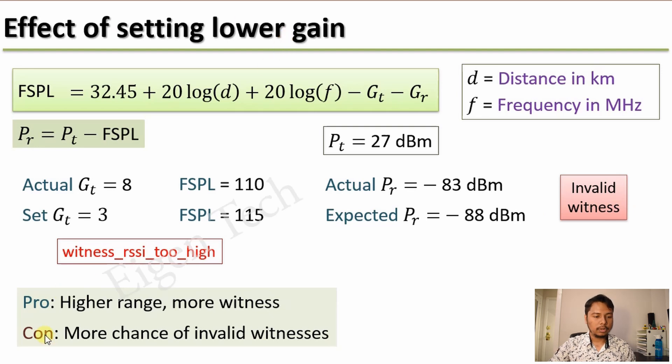Setting a lower gain has pros and cons. The pro is that it will have higher range because your transmitted power will not be clipped or will not be reduced. So your signal will cover more distance, reach further out and you have a chance of getting more witnesses. However, the con is that you have more chance of getting invalid witnesses because you set the antenna gain incorrectly.